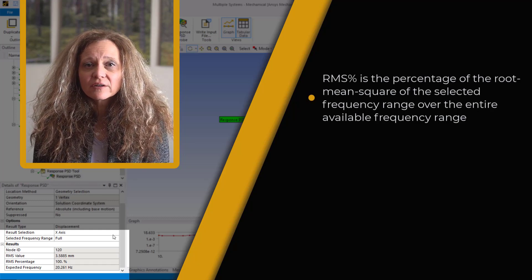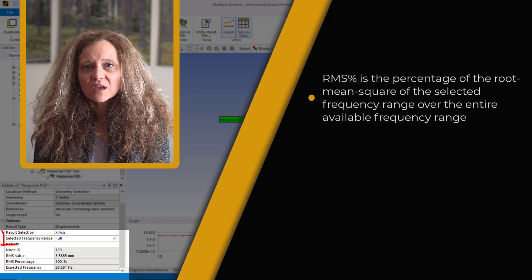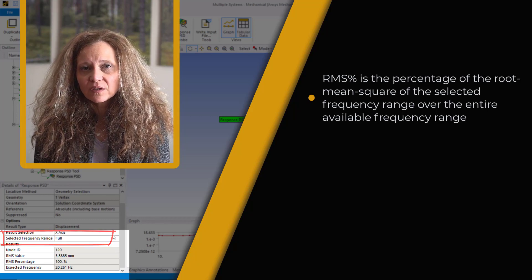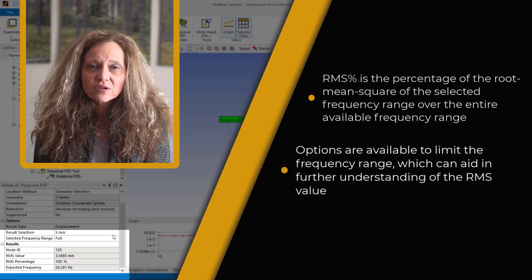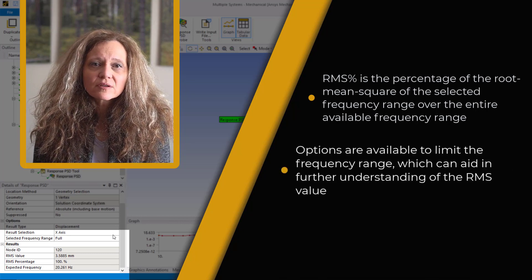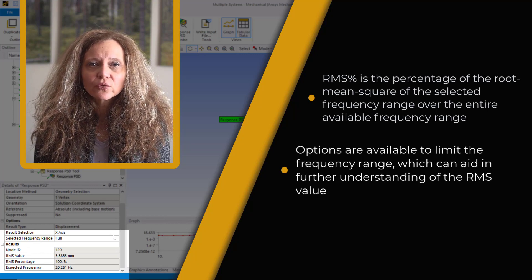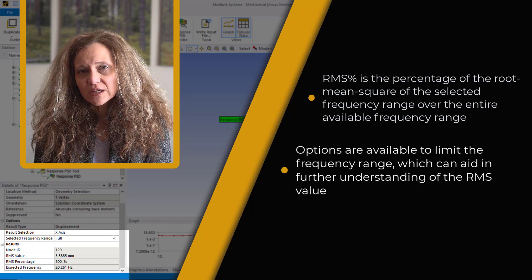Note that the RMS% is 100%. RMS% is the percentage of the root mean square of the selected frequency range over the entire available frequency range. In this case, the frequency range is set to full and RMS value is 3.58 mm. There are options to limit the range to user-defined values which can further aid in understanding of RMS response over the specified range such as around specific natural frequencies.